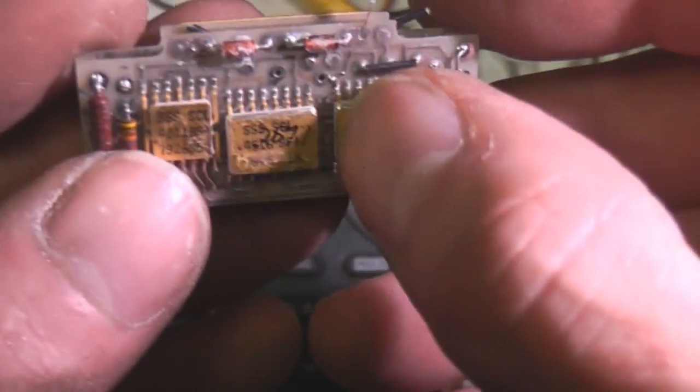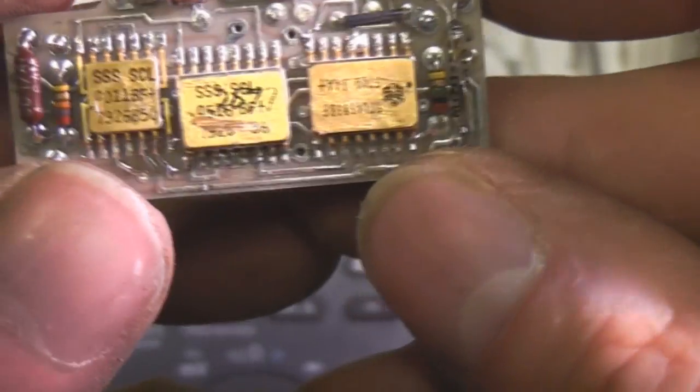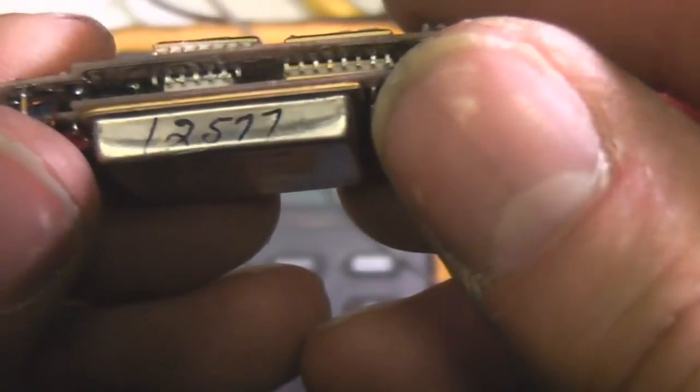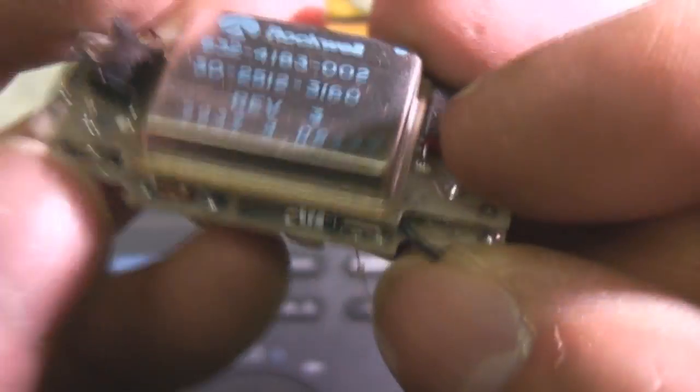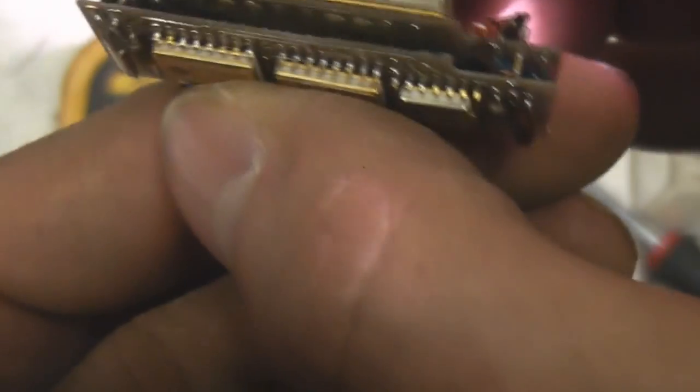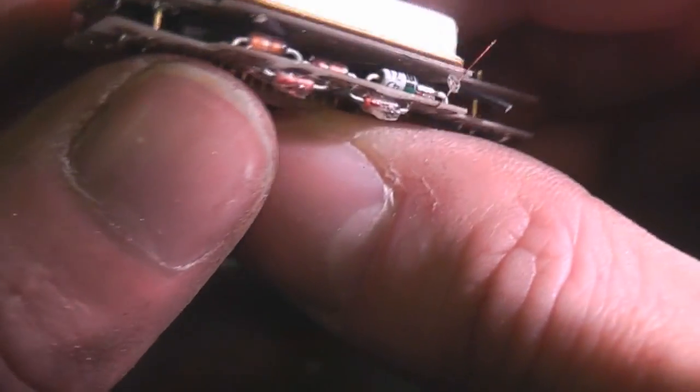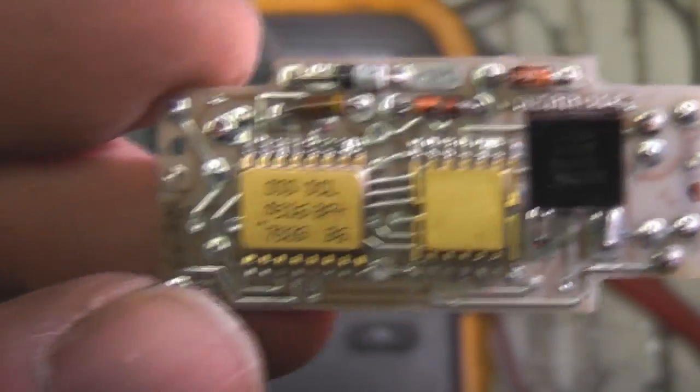We've got some surface mount packages, very reminiscent of old military type stuff. There's a few on the other side as well, but quite a lot of through-hole parts. I think those are standard FR4 PCBs just stuck together. Looks like there's only four interconnections between the boards. Unless there's a connector further down. Yep, just four connections.